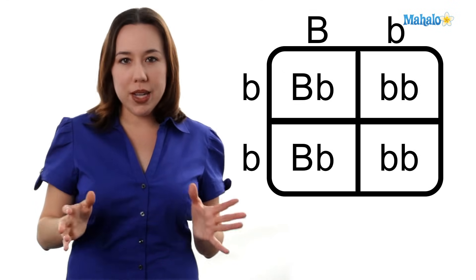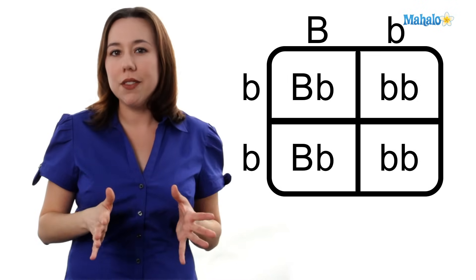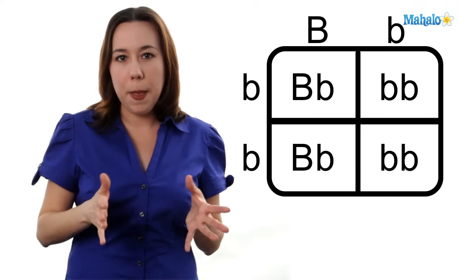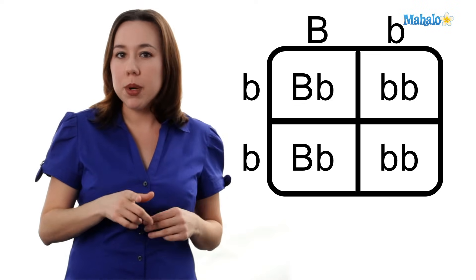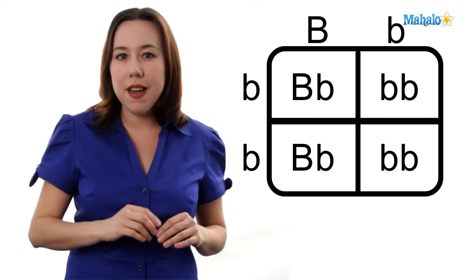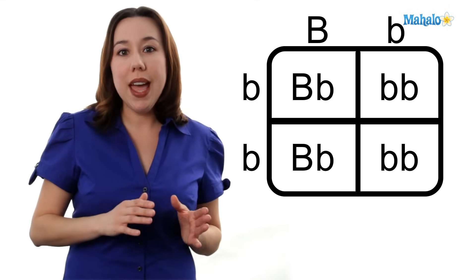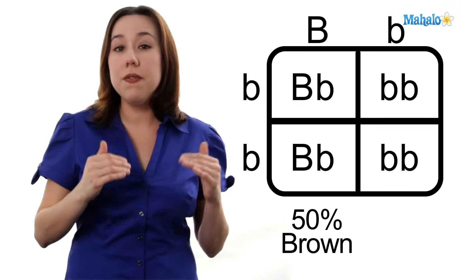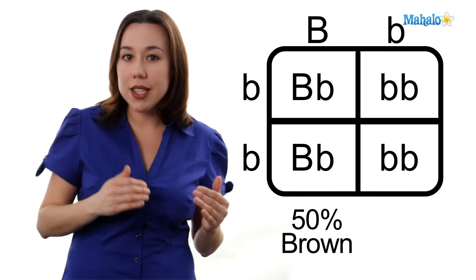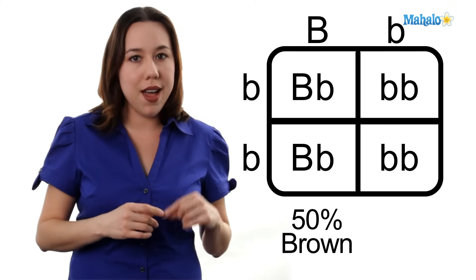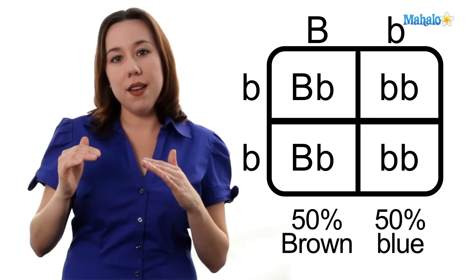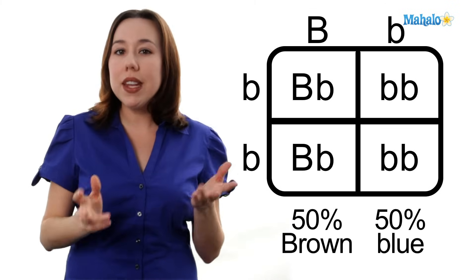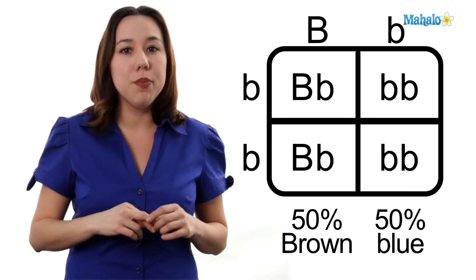What does that mean for the probability of getting an offspring with a certain eye color? Remember, each of those squares is going to be 25 percent. So we have a 25 plus 25, or 50 percent chance of getting an offspring with brown eyes. And we have a 25 plus 25, or 50 percent chance of getting an offspring with blue eyes.